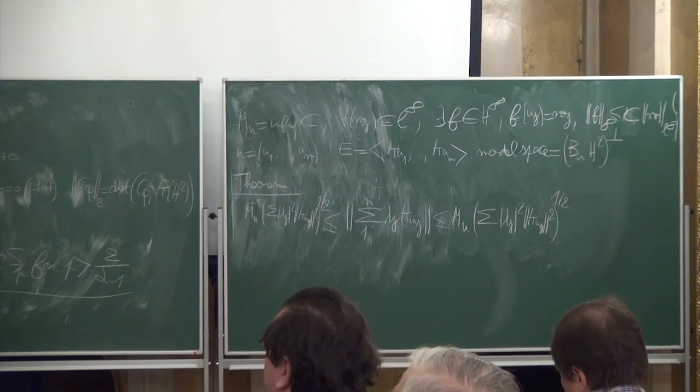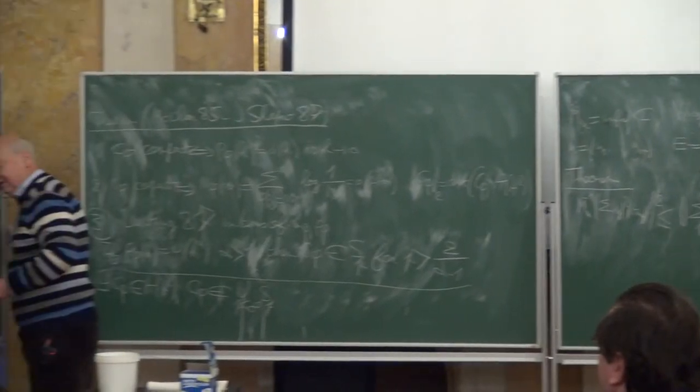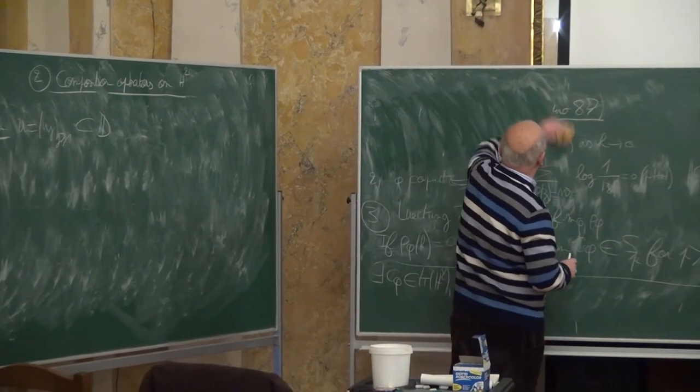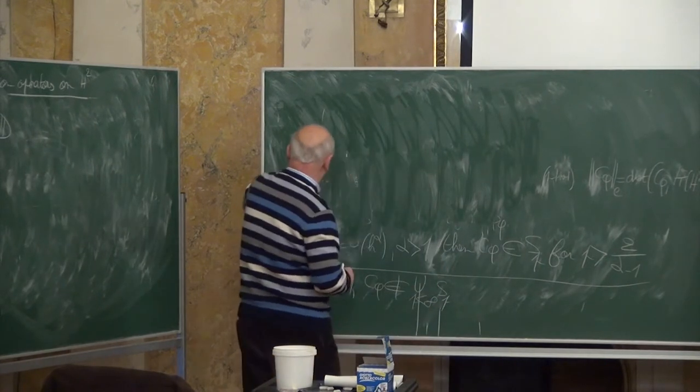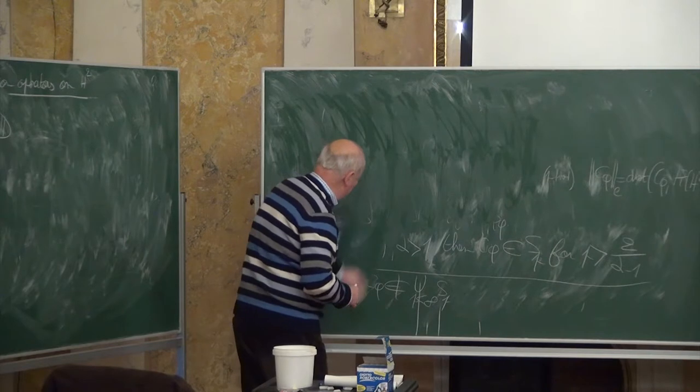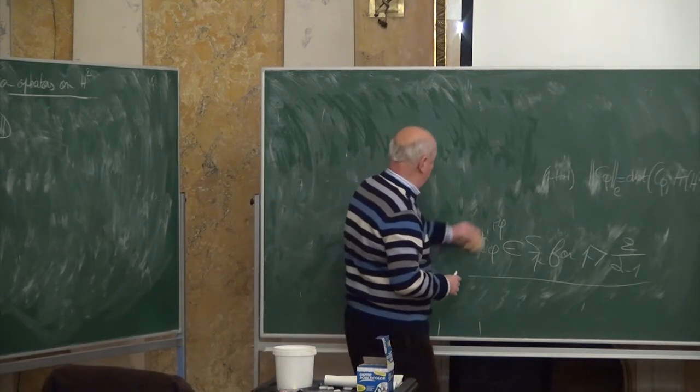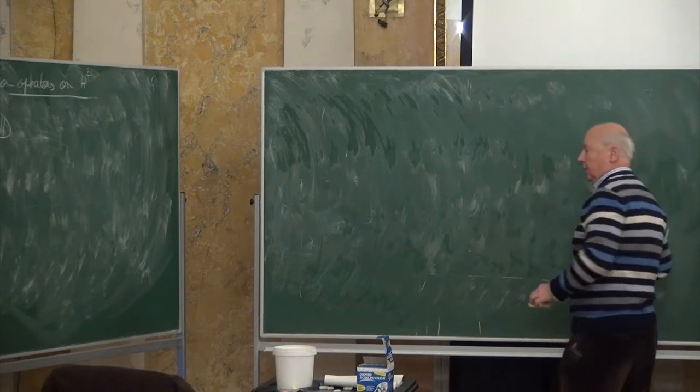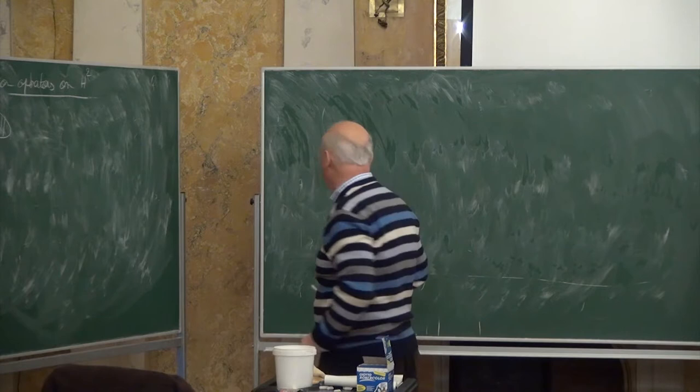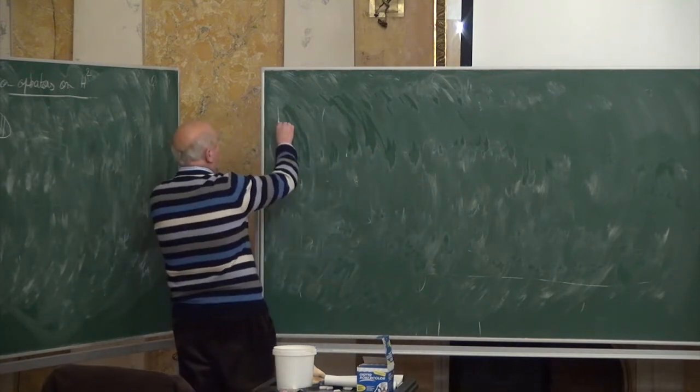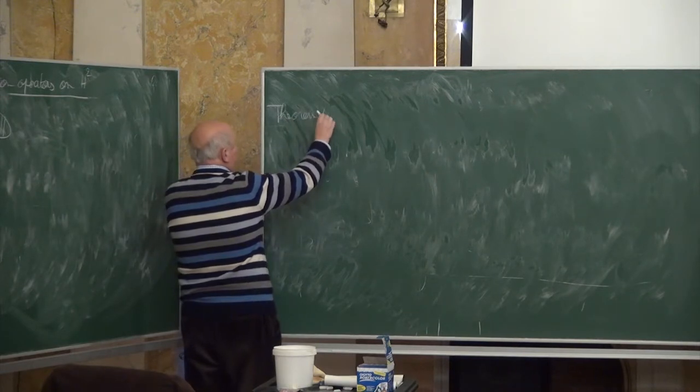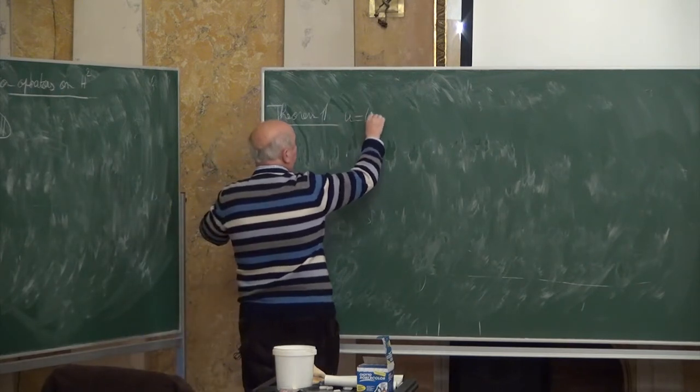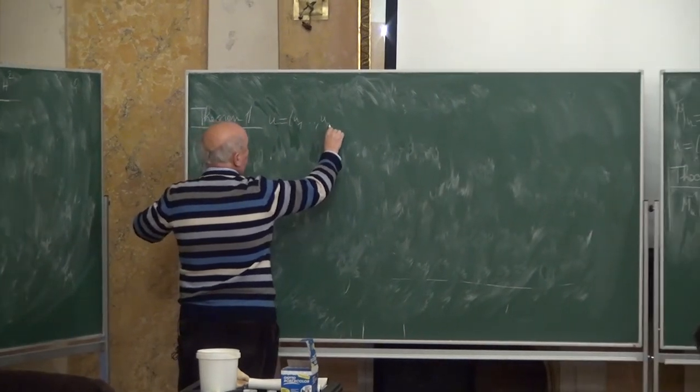So you have the following theorem which you can find in the book of Nikolski on the shift operator. If you consider a combination of those reproducing kernels, it is less than m sub u times the sum of squares of the norms k uj square to the one half, and you have a similar inequality from below. What does that mean? It means that a sequence of reproducing kernels is no longer an orthonormal sequence, but it is something which resembles an orthonormal sequence. It is a Riesz sequence with constants which are related to the interpolation constant of the sequence u. Another way to phrase it is to say that the sequence of reproducing kernels is unconditional in the Hilbert space H with unconditionality constant m sub u.